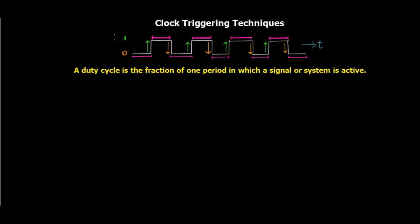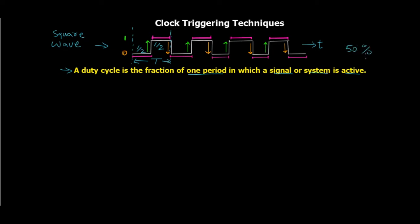In the previous video tutorial I mentioned the term duty cycle but forgot to explain it, so let me quickly cover that. Theoretically, a duty cycle is the fraction of one period in which a signal or system is active. For a digital square wave, the time period is one complete cycle — from 0 to 1 and back to 0. If the signal is active for half the period and low for the other half, the duty cycle is 50%. Duty cycle is generally expressed as a percentage.